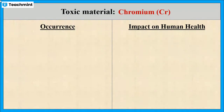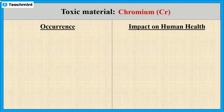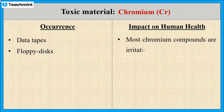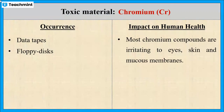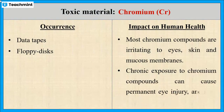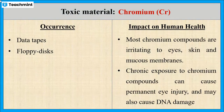The next one is chromium. Chromium and its oxides are widely used because of their high conductivity and anti-corrosive properties. They are majorly used in data tapes and floppy disks. The chromium compounds are irritating to eyes, skin and mucous membranes. Severe exposure can cause permanent eye injury or even damage to DNA.